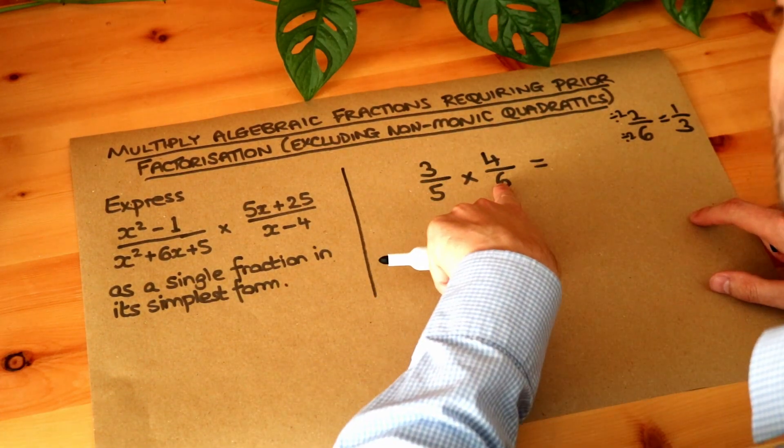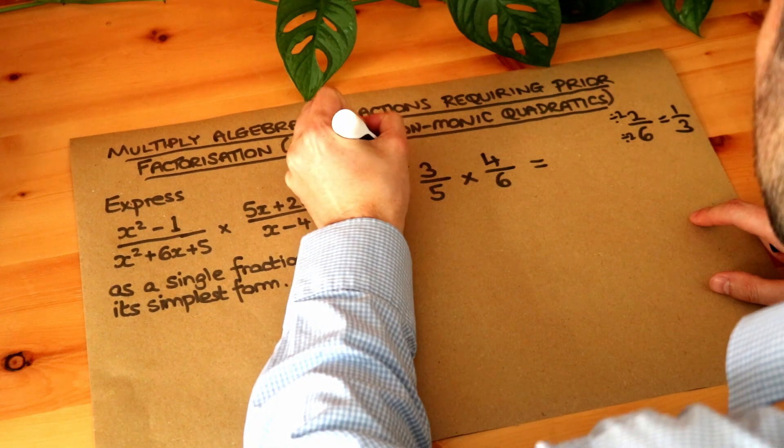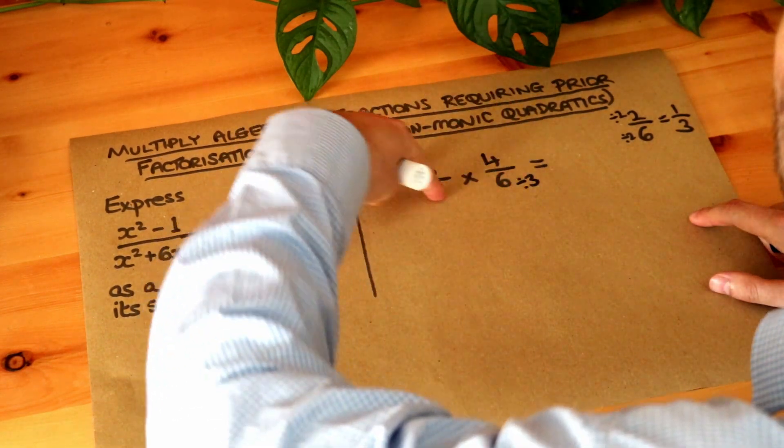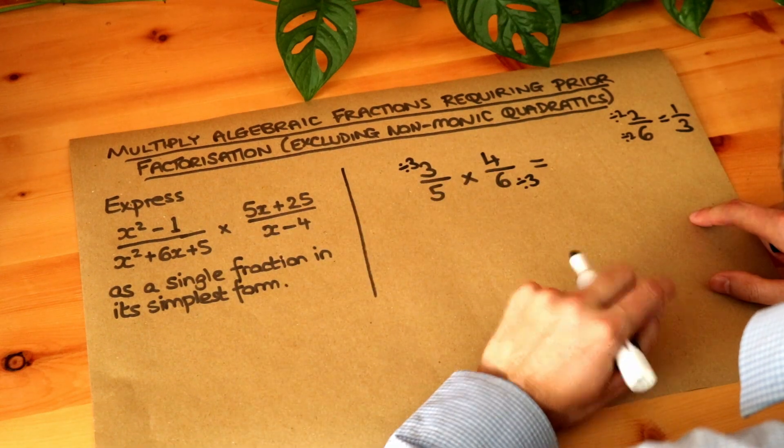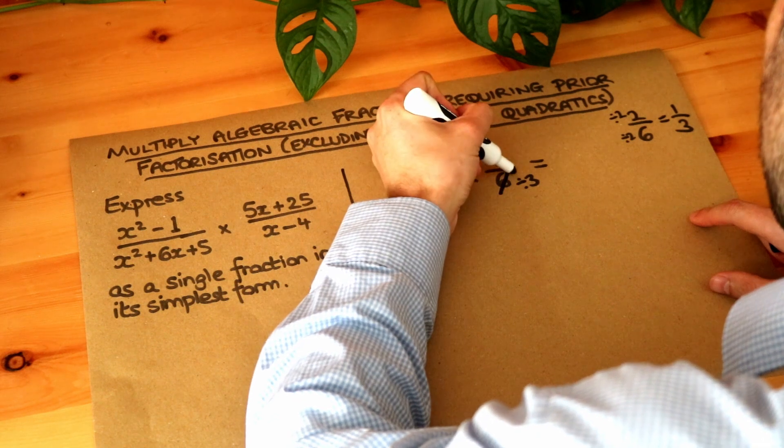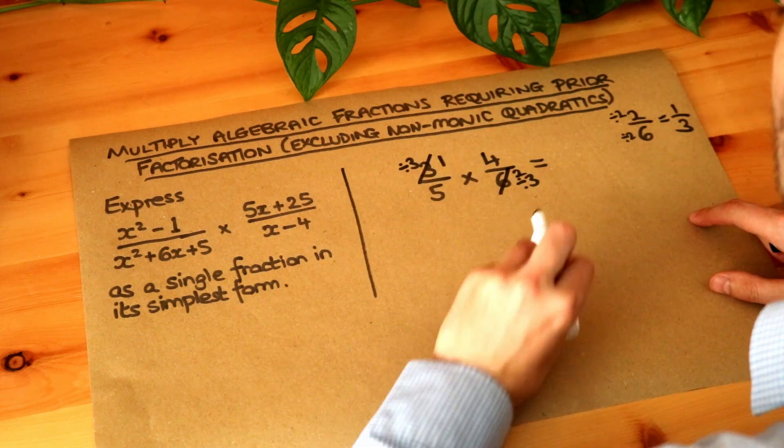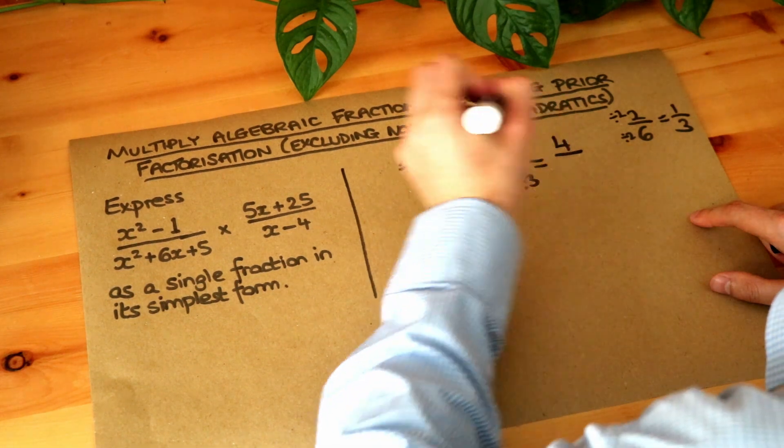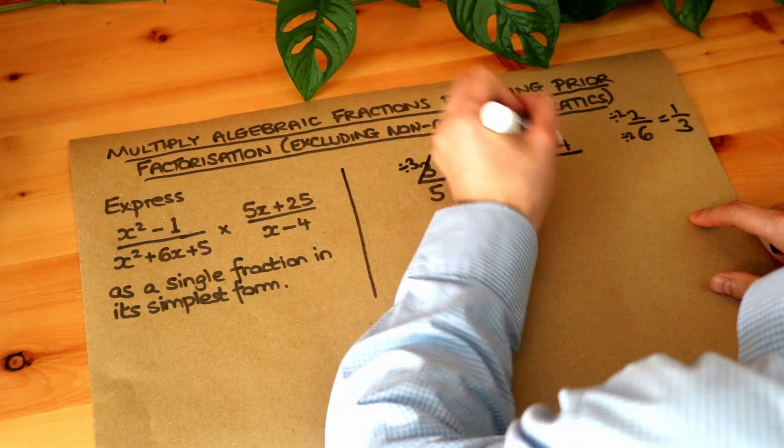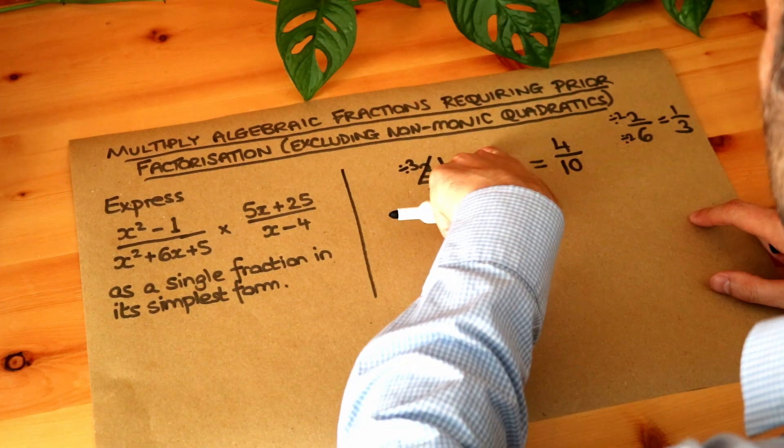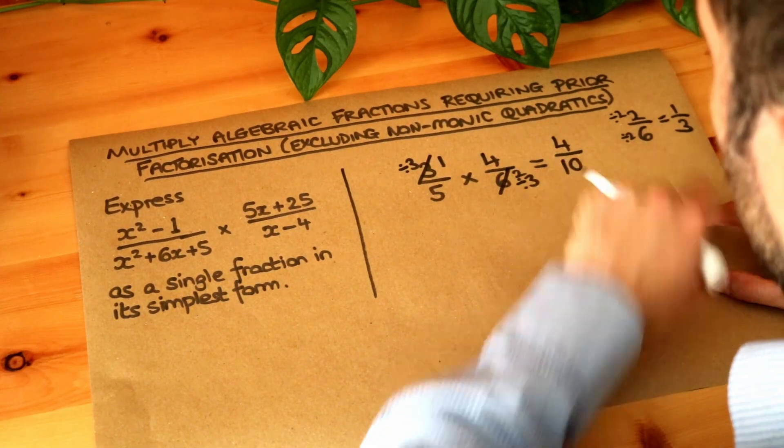So can you see 3 and 6 for example both divide by 3? So you can divide those both by 3 despite the fact they're not in the same fraction. They're diagonally opposite. And that then becomes 1 and that then becomes 2. And then it's much easier. We've got 1 times 4 which is 4 and we've got 5 times 2 which is 10. And we could simplify that further by dividing by 2. We could have divided the top and bottom here by 2 before we got to this stage.